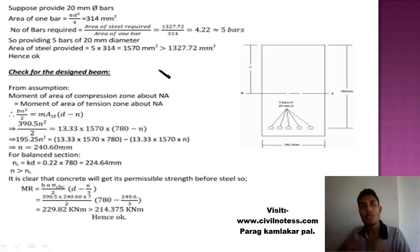After that, multiply this 5 with the area of one bar so you get the provided area. We required area is 1327, but from our calculation the area of steel provided is 1570. Hence the safe check is: the calculation is coming always greater than the required area. Why we are getting this? Because we assume it as a balanced section. So we get this value, and now we got the number of bars, the area of steel, and the dimension.